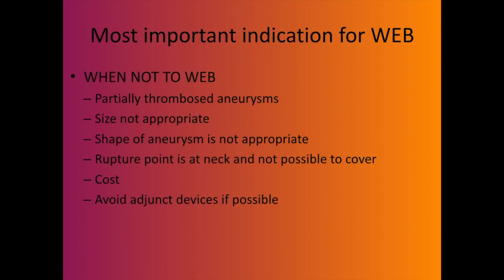The most important thing I've learned is when NOT to use WEB: partially thrombosed aneurysms are very difficult and in my hands WEB doesn't do a great job there; when the size is not right; when the shape is not right; when you have a rupture point at the neck. And of course, consider cost — if you can coil an aneurysm for 200 pounds, why use a WEB that costs 9,000 to 12,000 pounds?